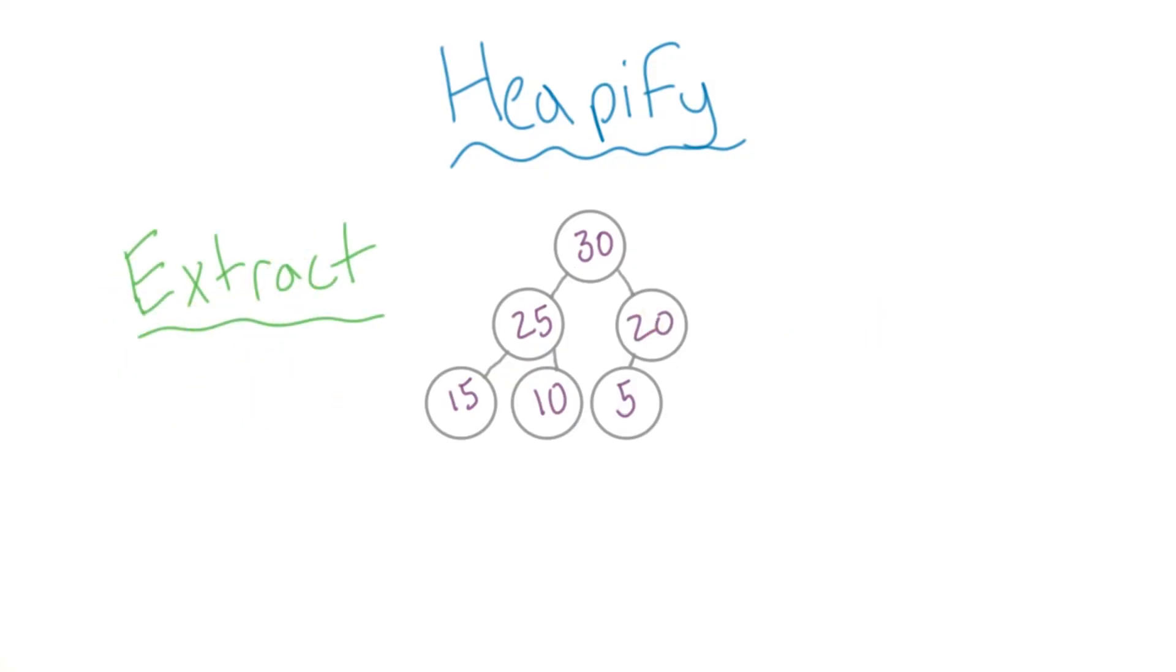We can take a similar approach to an extract operation, where the root is removed from the tree. We stick the rightmost leaf in the root spot, then just compare it to its children, and swap where necessary.